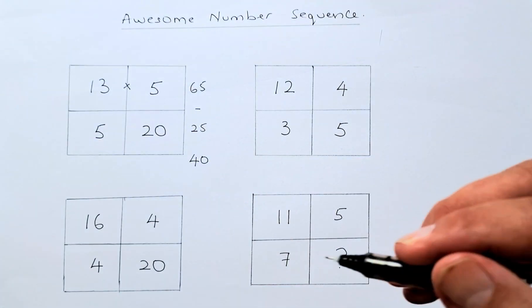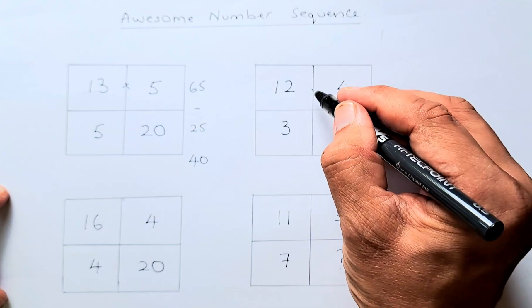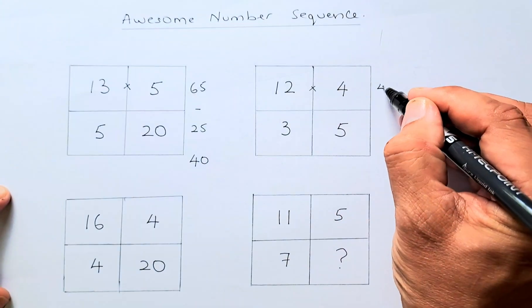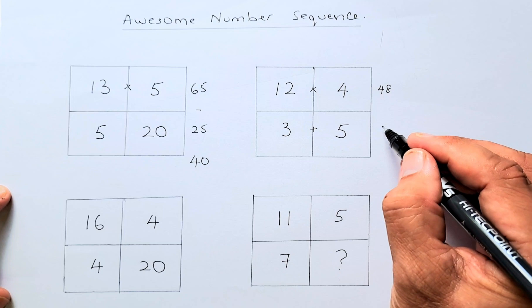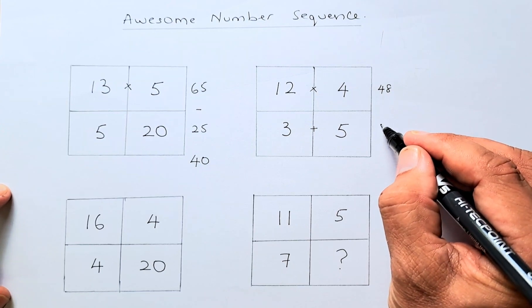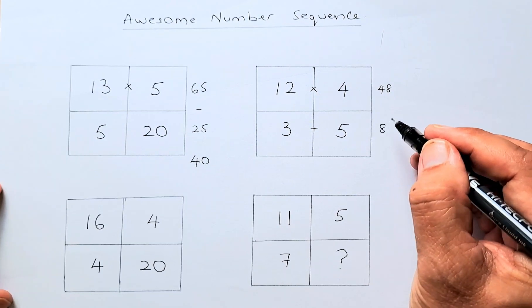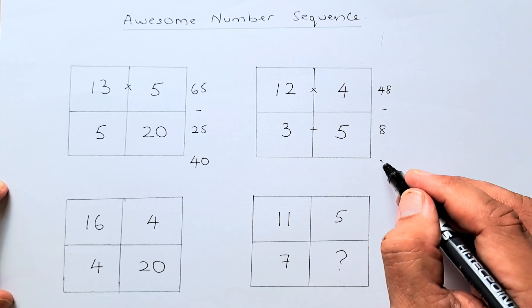Similarly, for the second box, 12 times 4 is 48. Then 3 plus 5 is 8. When you subtract them, 48 minus 8, the answer is 40. So there is the pattern.